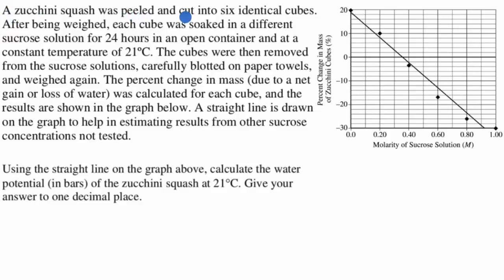A zucchini squash was peeled and cut into six identical cubes. After being weighed, each cube was soaked in a different sucrose solution for 24 hours in an open container and at a constant temperature of 21 degrees Celsius.